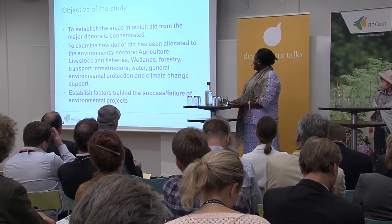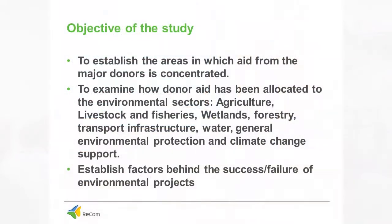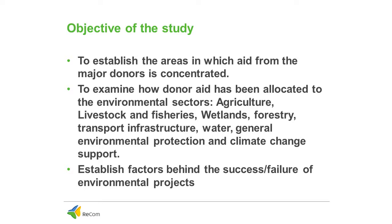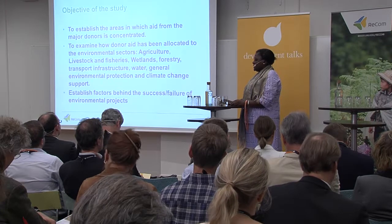The objective of the study is to establish the areas where aid is flowing most, and to examine how much aid has been allocated to environmental sectors. Beyond environmental protection, the study looks at agriculture, livestock and fisheries, wetlands, forestry, transport infrastructure, and water. The study also seeks to evaluate the success of interventions resulting from aid investments and to identify contributing factors to success and failure for potential replication elsewhere.